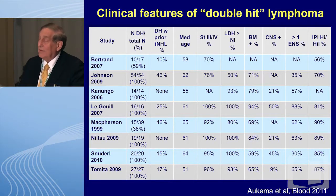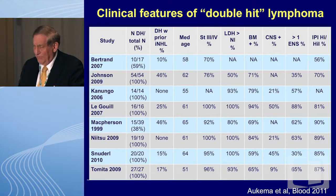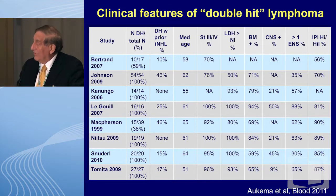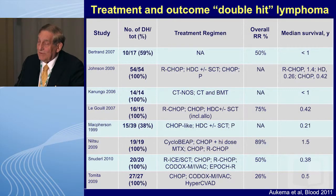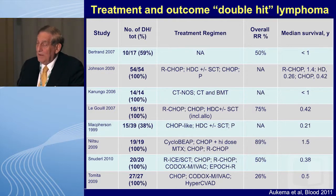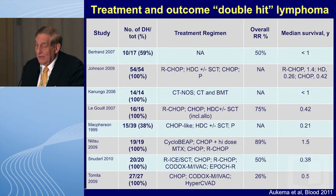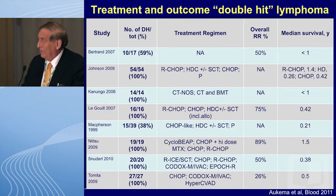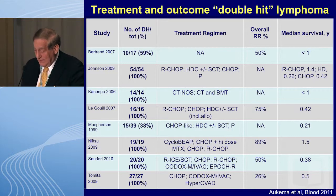Regarding clinical features of double hit lymphoma — suffice it to say they usually have very poor prognostic features: high LDH, bone marrow involvement, sometimes central nervous system involvement, and the IPIs tend to be quite high. Most of these double hits will have poor IPIs. The median survivals are quite poor — under one year — which is not surprising given that these patients presented with very poor prognostic factors to begin with, including that high KI67.